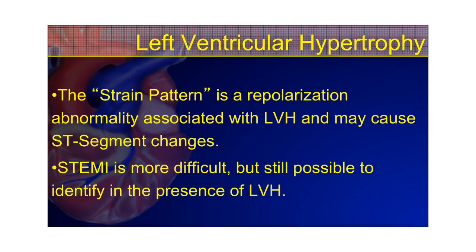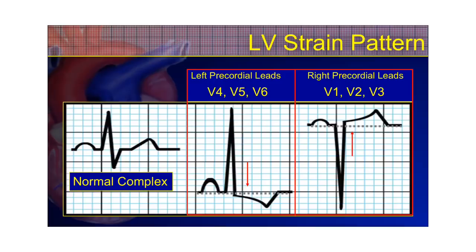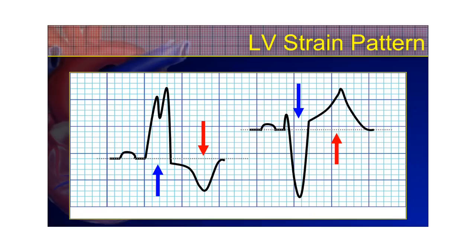The strain pattern in the left precordial leads — V4, V5, and V6 — shows upright QRS complexes with ST depression due to T-wave discordance. T-wave discordance simply means the T-wave is going in the opposite direction as the predominant wave of the QRS complex. A positive QRS with a negative T-wave drags the J-point down, causing ST depression. In the right precordial leads, you have the opposite: a deep QS wave with a positive T-wave that drags the J-point up, causing ST elevation in V1, V2, and V3.